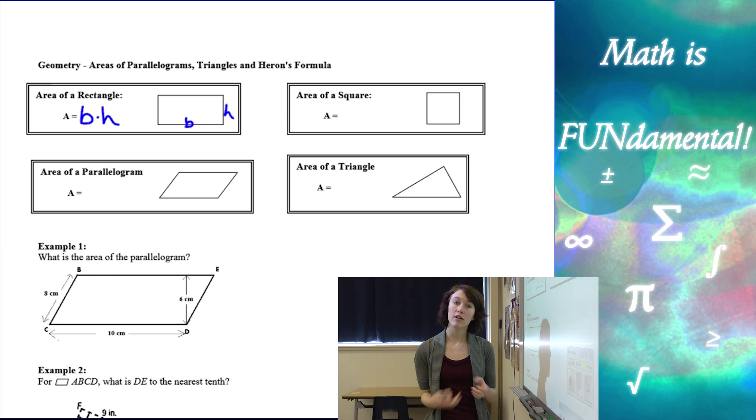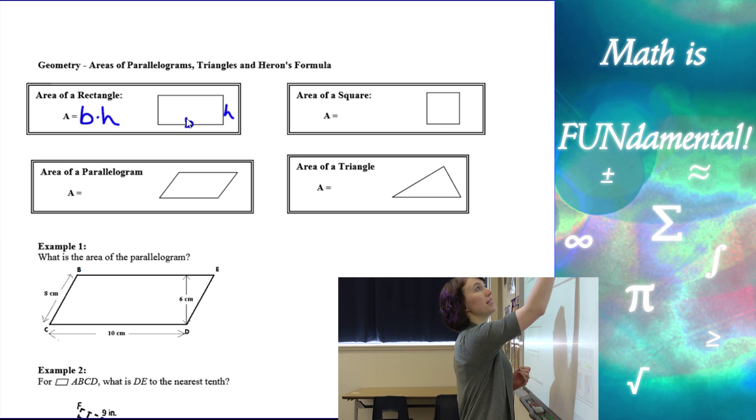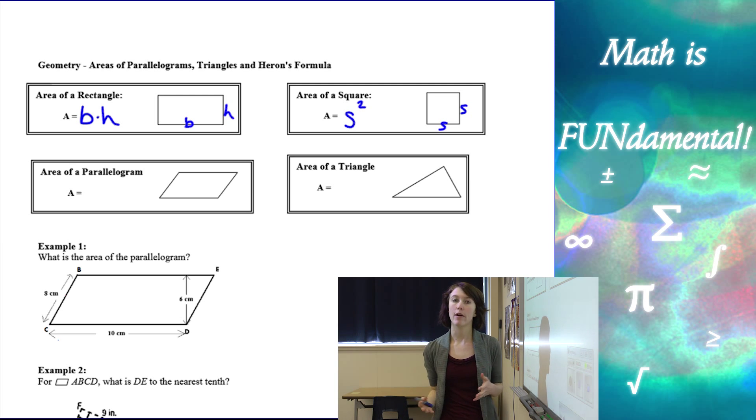Area of a square, and remember squares are always rectangles, so you can think of it like base times height, but since sides of a square are always congruent, we can also think of it as the side length of the square, and then squaring that length, so S squared.